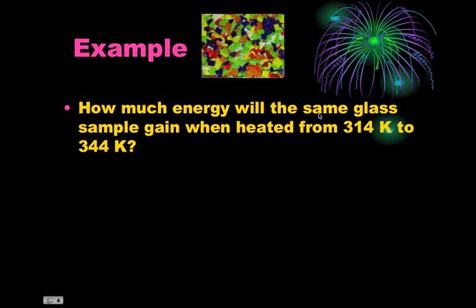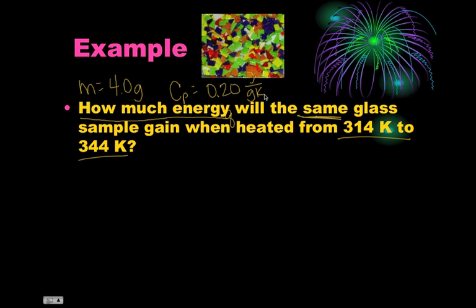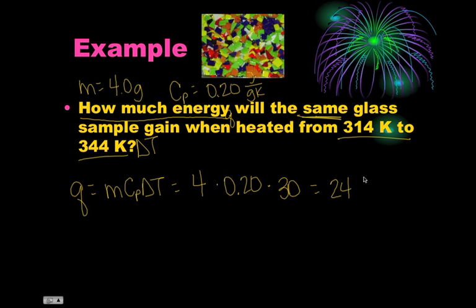Next example: how much energy will the same glass sample gain when heated from 314 to 344? So same glass means that the mass is the same - the 4 grams - and it means that since the question is asking how much energy, remember energy in this case is Q. We're going to use the C sub P that we just calculated, 0.20 joules per gram Kelvin, and this is going to be your delta T. So we are calculating for Q which means we don't need to rearrange anything. M C sub P delta T - plug in your numbers, we get M is 4 times C sub P which is 0.2 times delta T, 344 minus 314 is 30. This is going to be equal to these three numbers multiplied together. 4 times 30 is 120 times 0.2 gives you 24, and the units on Q are joules.